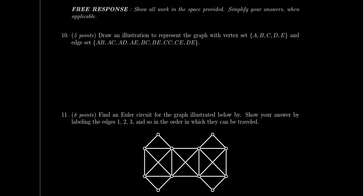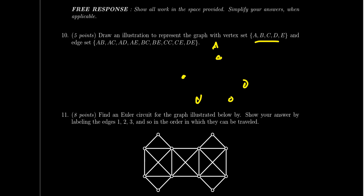Question number ten asks you to draw an illustration representing a graph when given the vertex set and edge set. You'd label the vertices A, B, C, etc., and connect the appropriate edges. There isn't a lot of work to show — the answer is the illustration itself. Note that graph illustrations are not unique; there are different correct ways to draw the same graph. This was covered in lesson one and is worth five points.